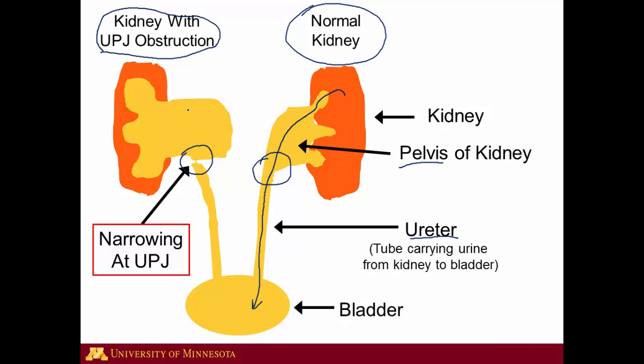Now if we go to the left-hand side, the kidney with UPJ obstruction shown here, you can see that there's a narrow area at the UPJ, and that's right here. When we have a narrowing at that area, it causes a problem with urine getting from the kidney down to the bladder. Urine is produced by the kidney, it comes down and tries to go through the ureter, but it's not able to because it's too tight — so instead it pushes out on the renal pelvis. You can see how the renal pelvis is quite a bit larger in the kidney with UPJ obstruction than the normal kidney. The name for this is hydronephrosis, and you may see in some of your radiology reports that hydronephrosis is present.